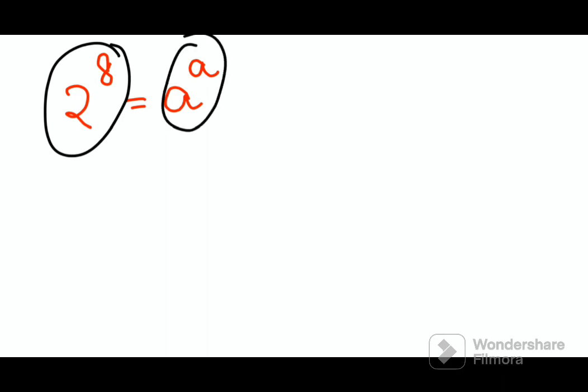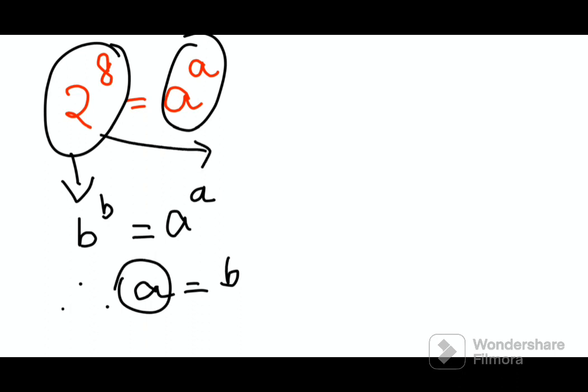So here you should make sure that this comes out to be form of B raised to B, so that when it is becoming equal to A raised to A, you can therefore directly say that A is equal to B. Your job is to find the value of A, not to find the value of 2 raised to 8.